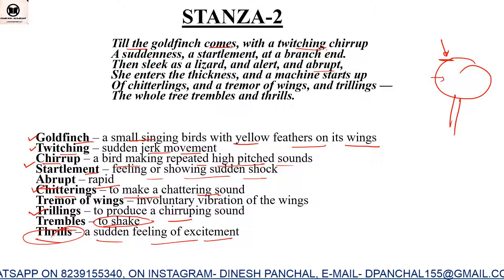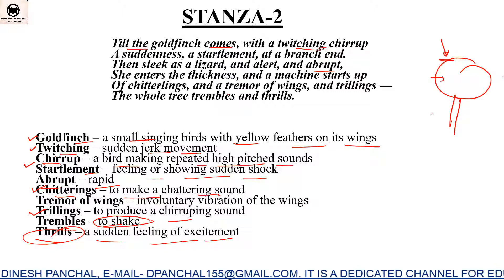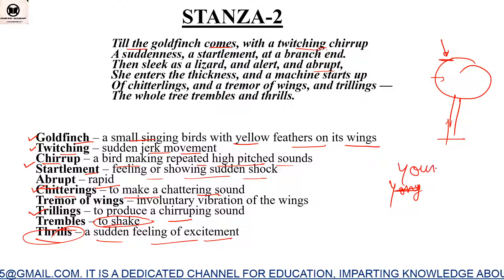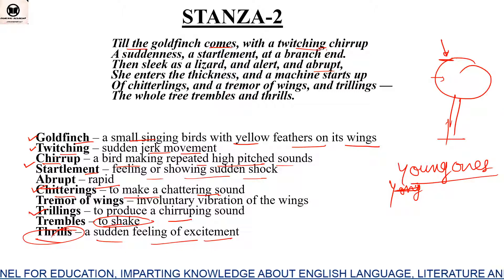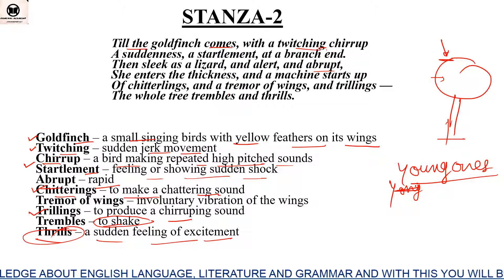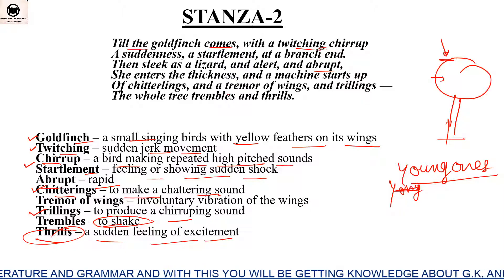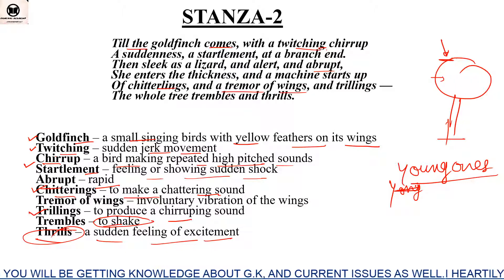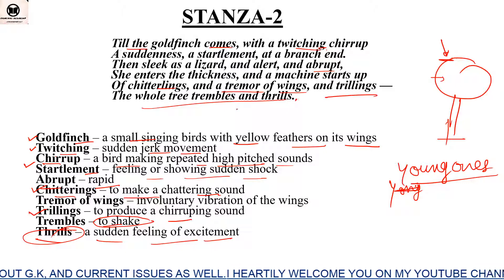'She enters the thickness and a machine starts up of chitterings' — the bird has come to feed her young ones. At that time the whole machinery of the tree starts — like a car engine starting up, a sound is produced. The goldfinch bird acts as the engine for that tree. 'Of chitterings and a tremor of wings and trillings' — we observe chitterings, a vibration in the wings.